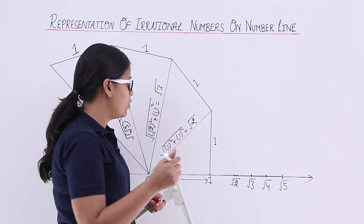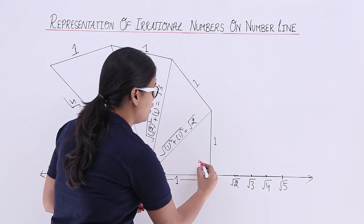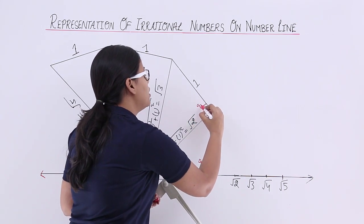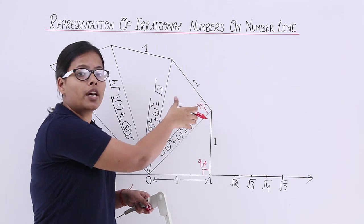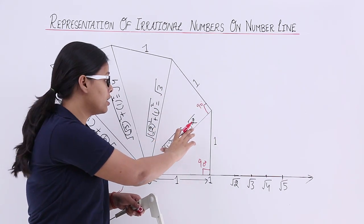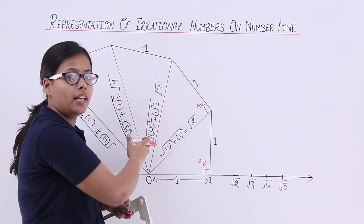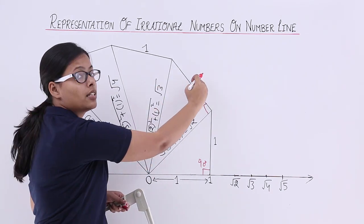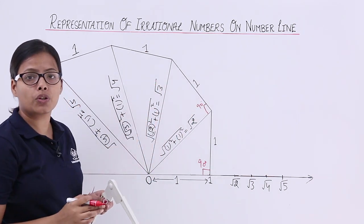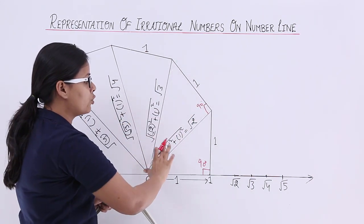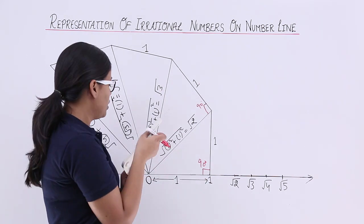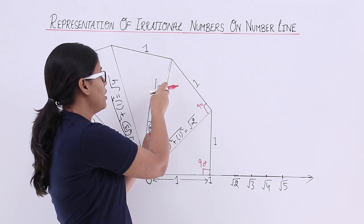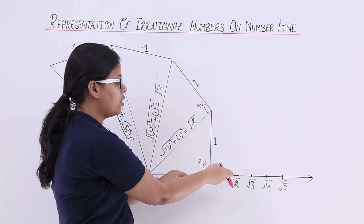Again, I have drawn a 90-degree angle and a line of length 1 on the number line at the point √2. So this new line will again be a hypotenuse. To calculate its length: (√2)² + 1² = √3. To plot √3 on the number line, open the compass to the length of √3 and then mark it on the number line.